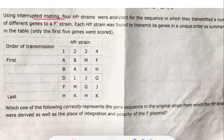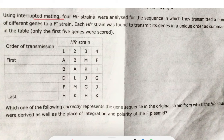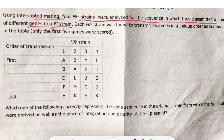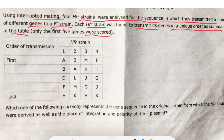Now let's look at the second question using interrupted mating. In interrupted mating, during the transfer of DNA from one bacterium to another, the conjugation tube breaks and mating is interrupted. Four HFR strains were analyzed for the sequence in which they transmitted genes to an F minus strain. Each HFR strain transmitted genes in a unique order as summarized in the table — only the first five genes were scored. HFR means high frequency recombinants.